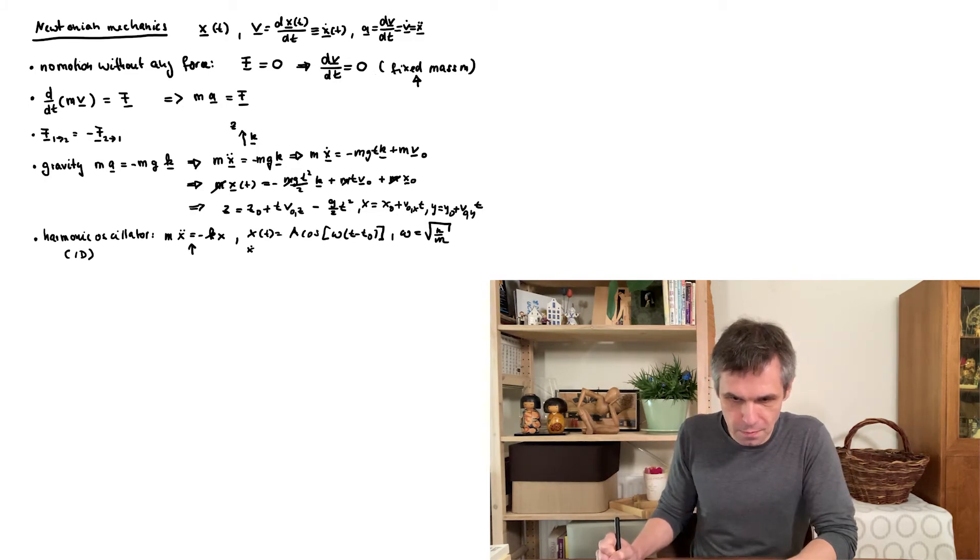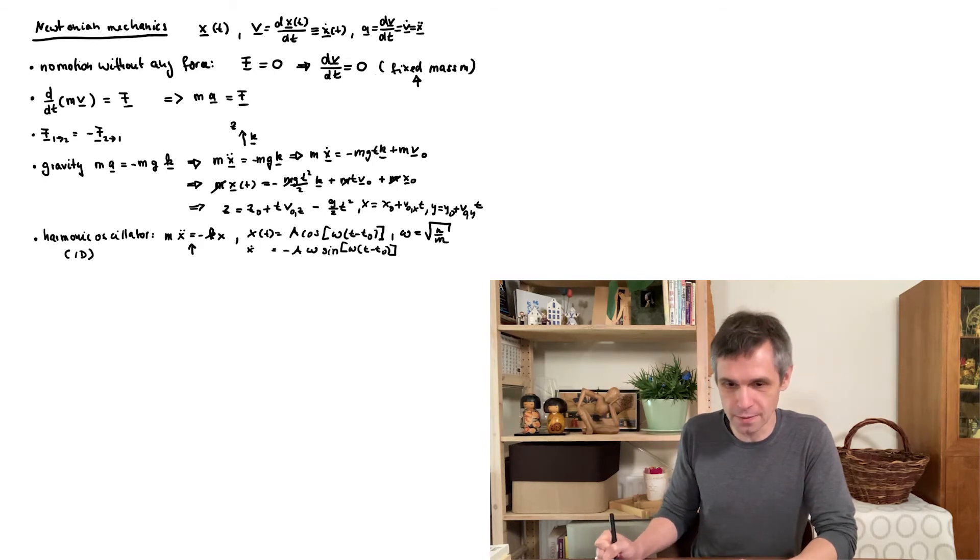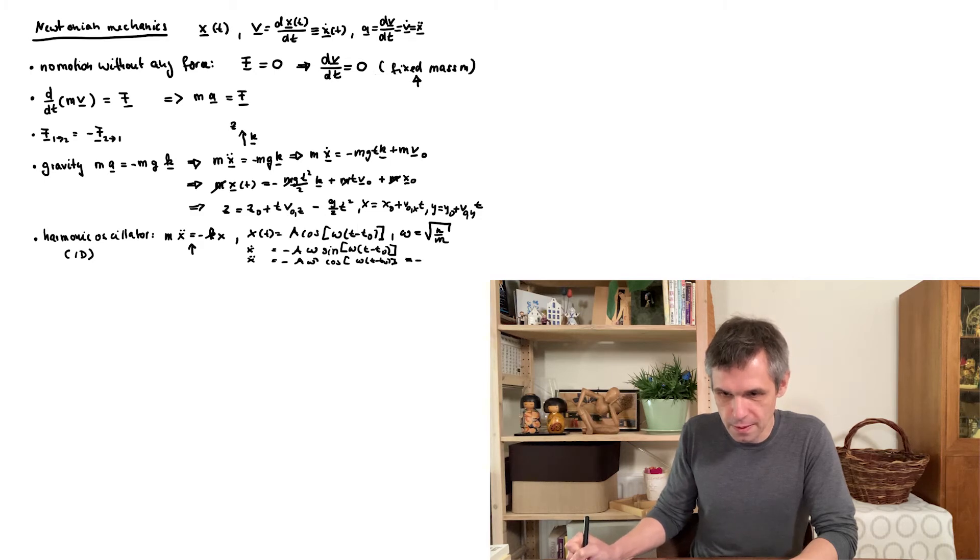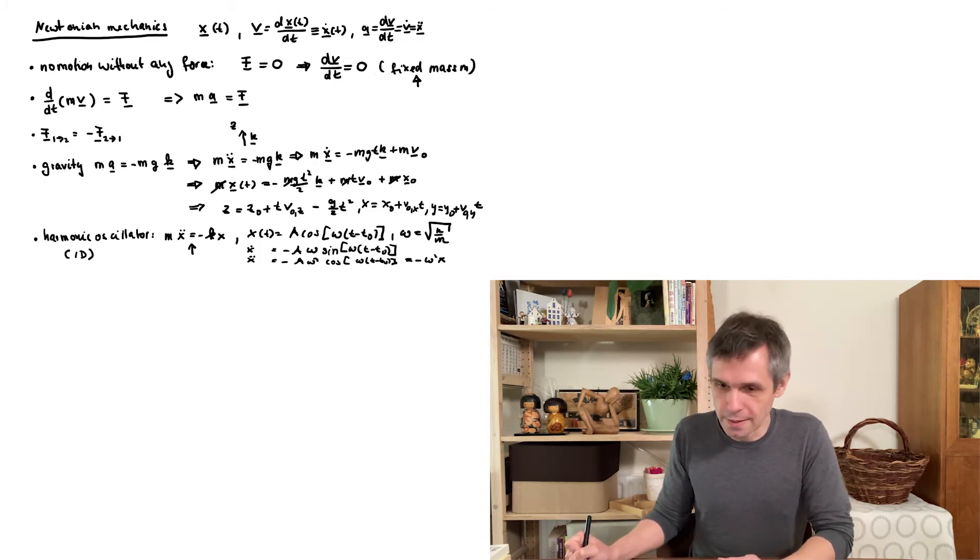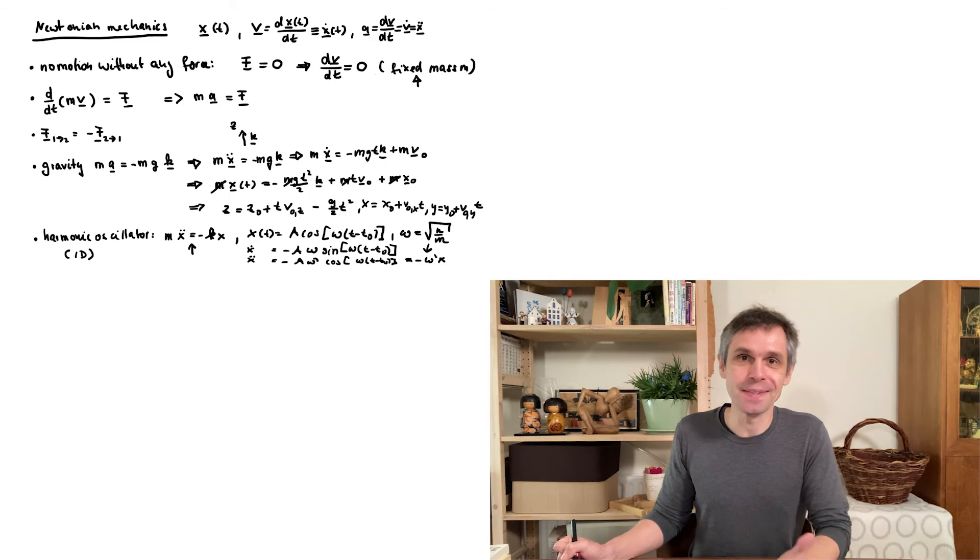So taking the first derivative with respect to time, we simply get minus a times the sine function with this argument. But because time in there is multiplied by a constant according to the chain rule also this factor omega in front. And then taking the second derivative we obtain minus a omega squared times the cosine of this argument. But this is simply minus omega squared times the function with which we started with. And then we simply need to insert the definition of omega here to see that everything is fine.